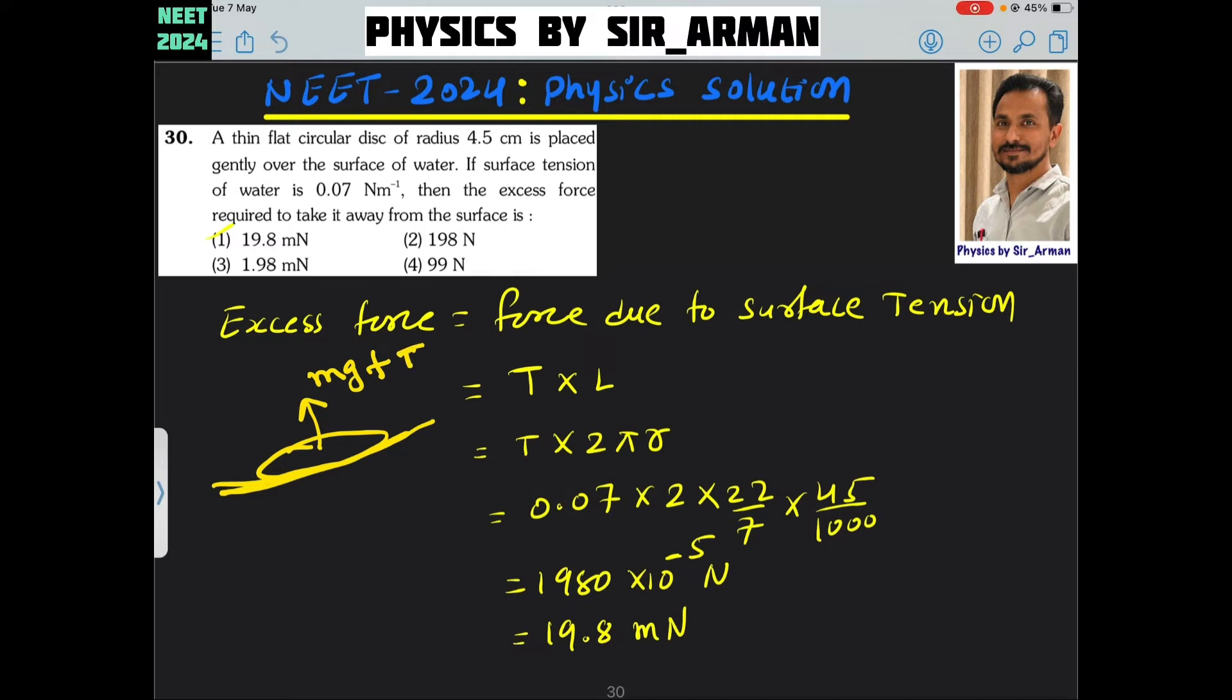This is the excess force. That excess force is the force from surface tension. Excess force due to surface tension equals surface tension into length of this disc. Sometimes surface tension is denoted by T or by letter sigma. Here we denote it by letter T.